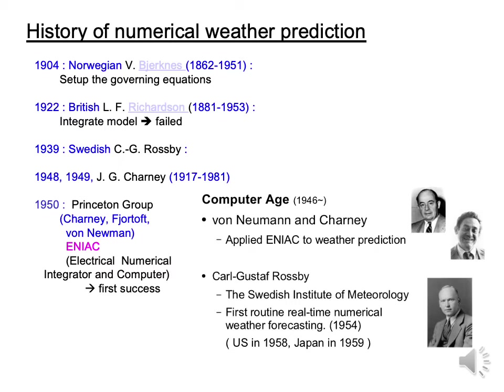In 1950, the Charney group first succeeded in a day-two forecast using their first computer, ENIAC.